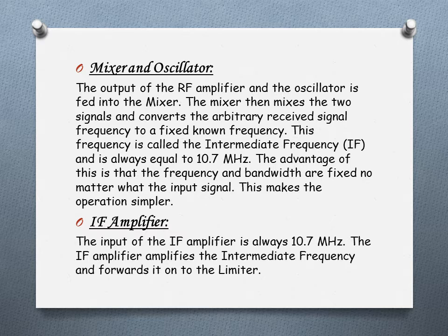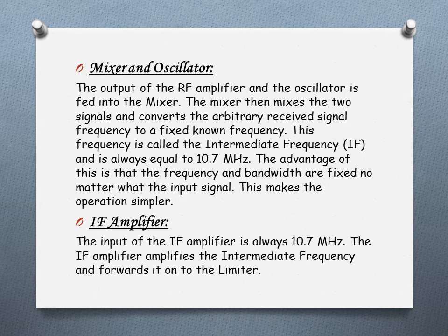The fourth component is the IF amplifier. The mixer outputs an intermediate frequency which is amplified by the IF amplifier. The IF amplifier does not amplify the frequency itself, but amplifies the amplitude of the wave coming from the mixer. The input of the IF amplifier is always 10.7 MHz. The IF amplifier then forwards the amplified intermediate frequency on to the limiter.